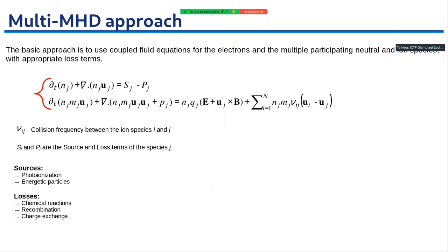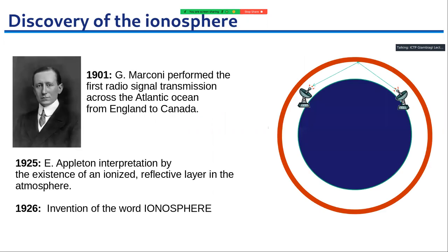In the continuity equation you see two types of terms: the source terms S, which are related to photoionization or energetic particles, and the loss terms, which are related to chemical reactions, recombination, or charge exchange.